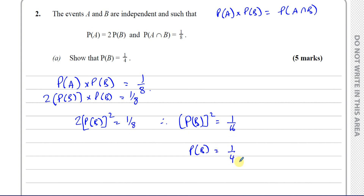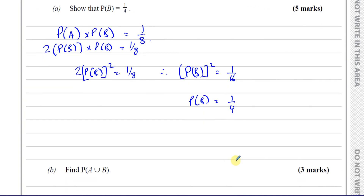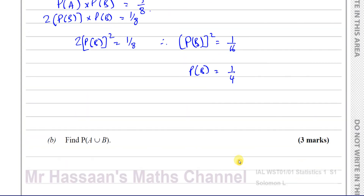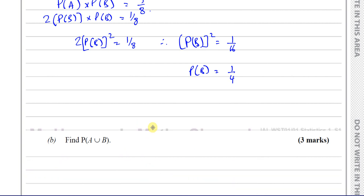It can't be negative 1/4 — probability can't be negative. So even though taking the square root gives a positive or negative answer, we cannot have a negative probability. The answer is 1/4. So there's the answer to part A: the probability of B is equal to 1/4.